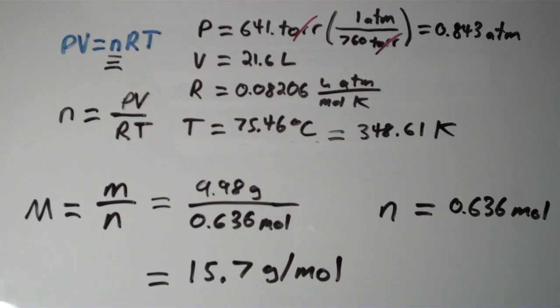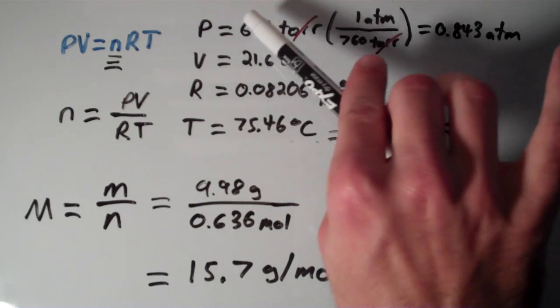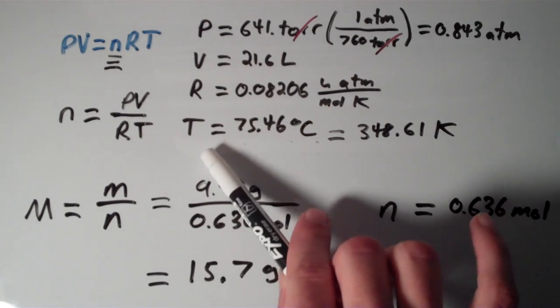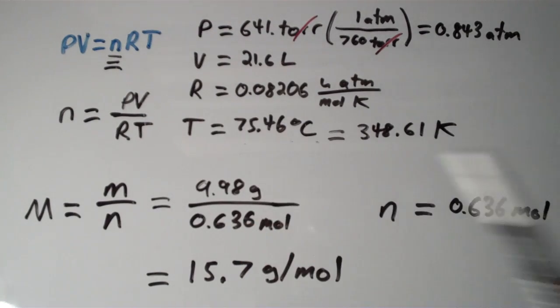So that is the correct way to use the ideal gas law to solve for the molar mass of a gas, given the pressure, the volume, and the temperature. The gas constant, that will always be known.